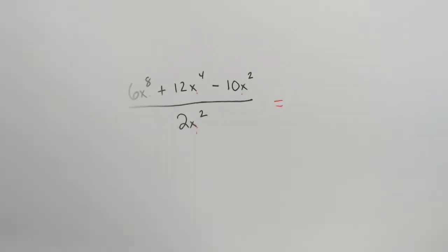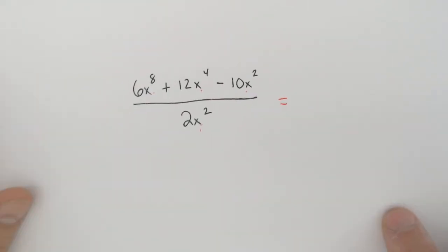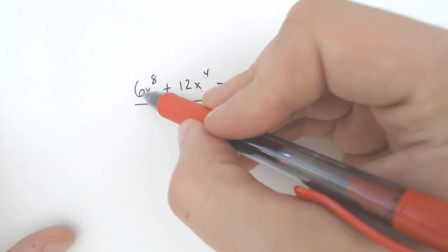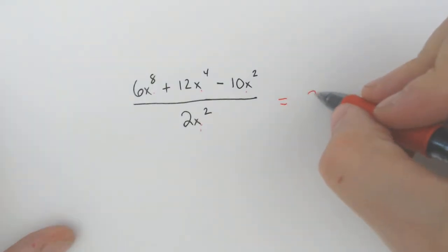then nothing changes. You divide each of these individually. You can either rewrite it like we did last time where you divide them individually, or you can do it in your head.